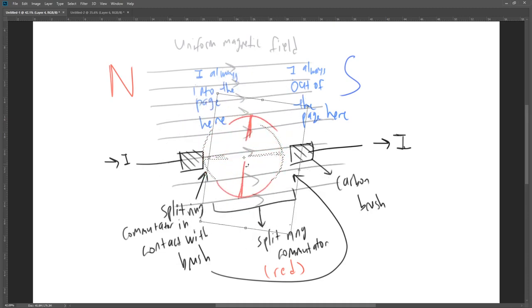At points where the coil is not in contact with the split ring commutator, for example when it is vertical, the coil will continue rotating due to its inertia. The rotation of this coil is what powers the paddle of our DC motorboat.